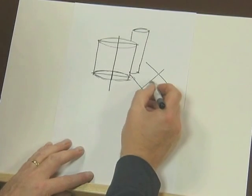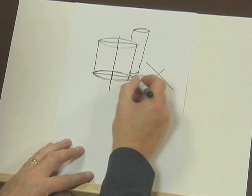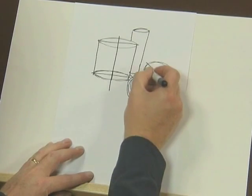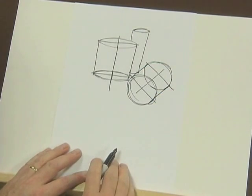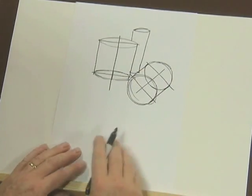And then I use those to help me construct the two ellipses that are going to be the top and bottom of the tin which is lying on its side. So you can see here now we've got three cylinders.